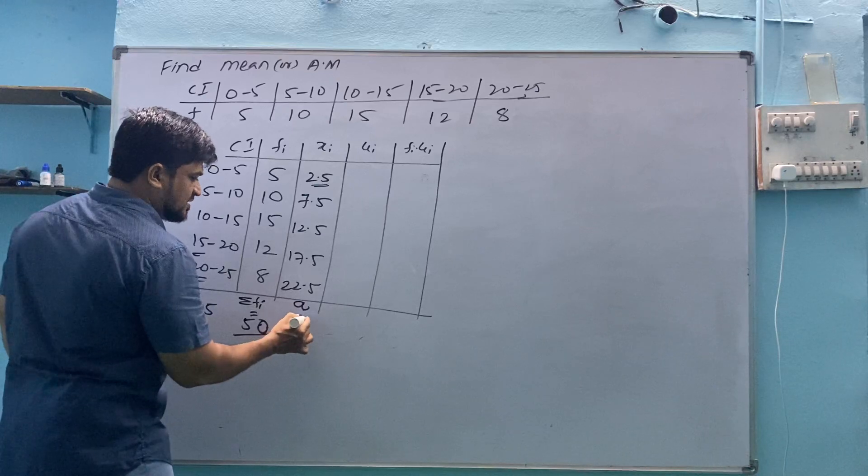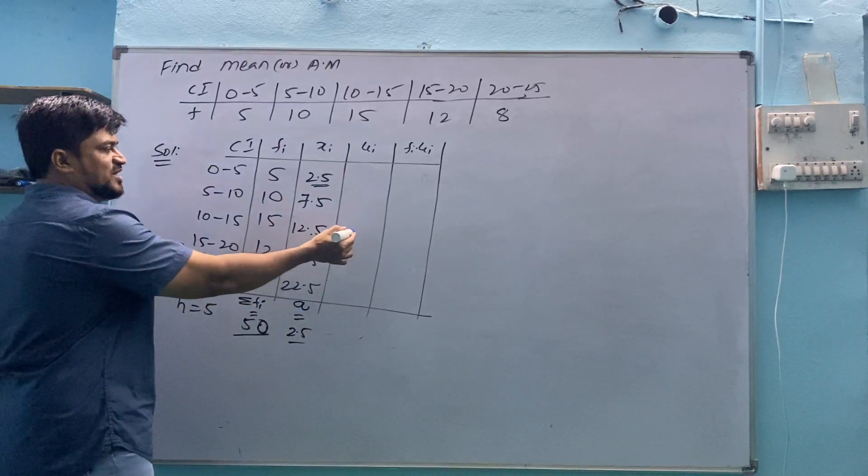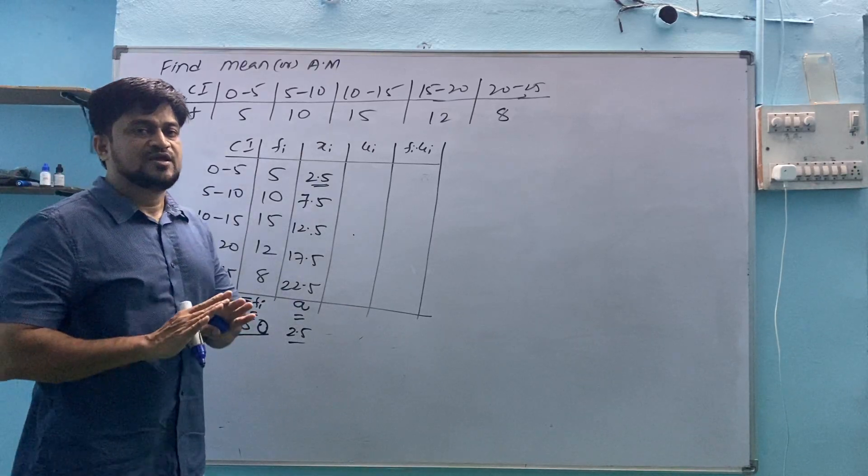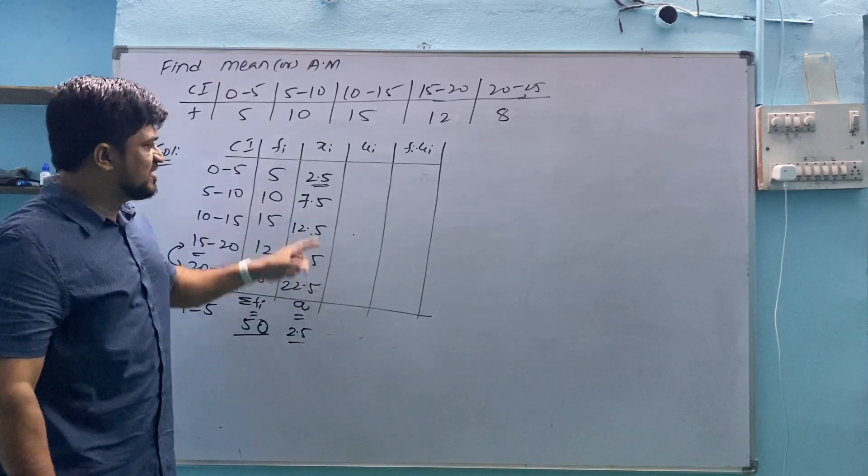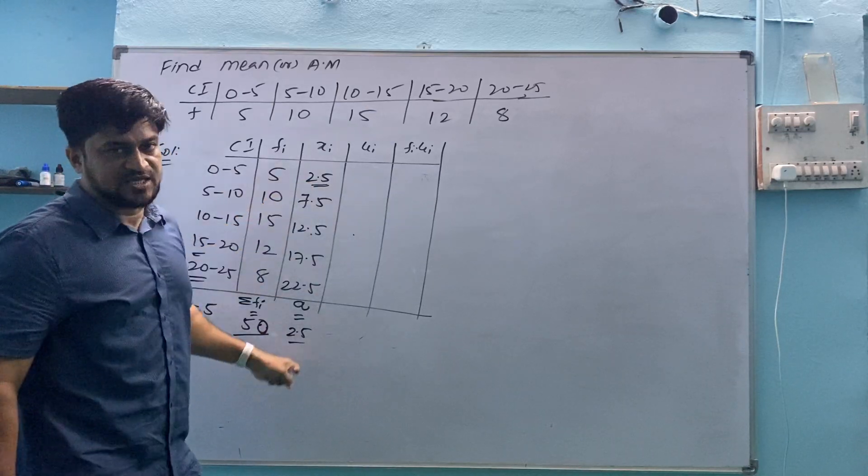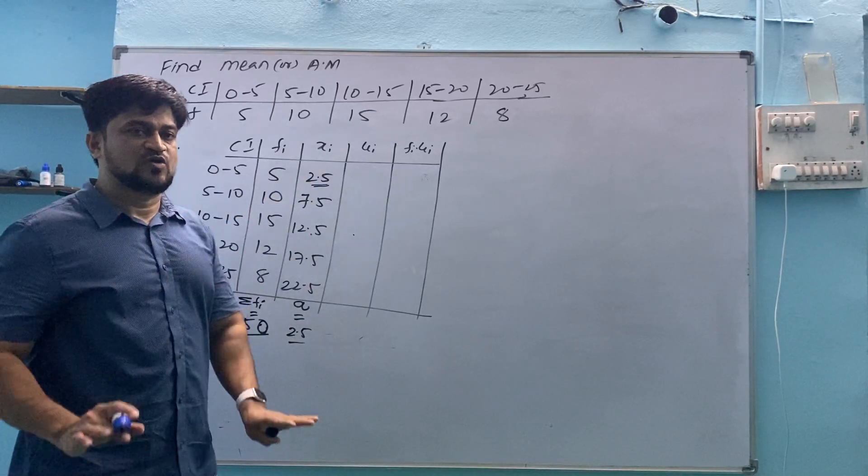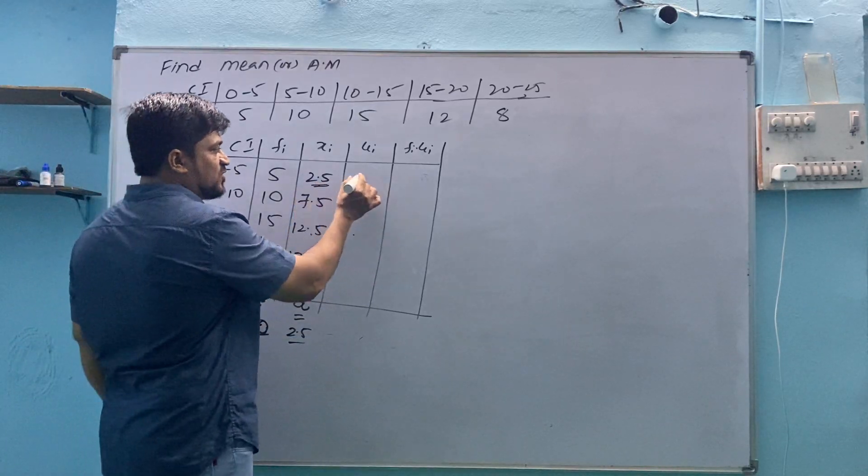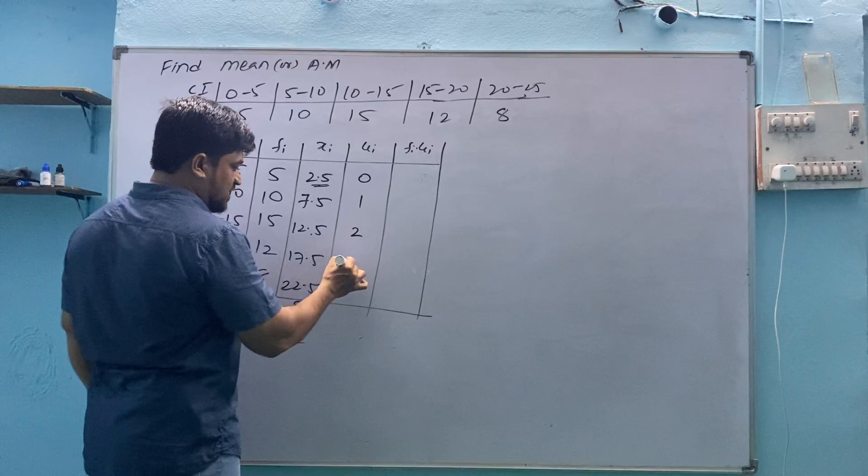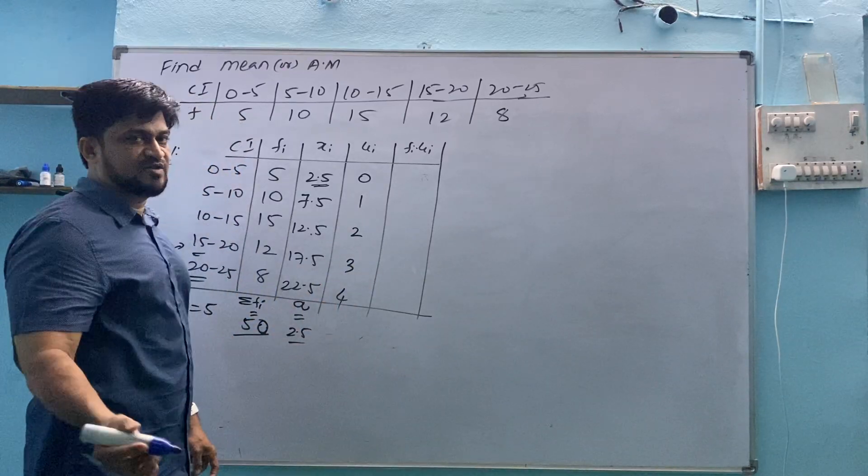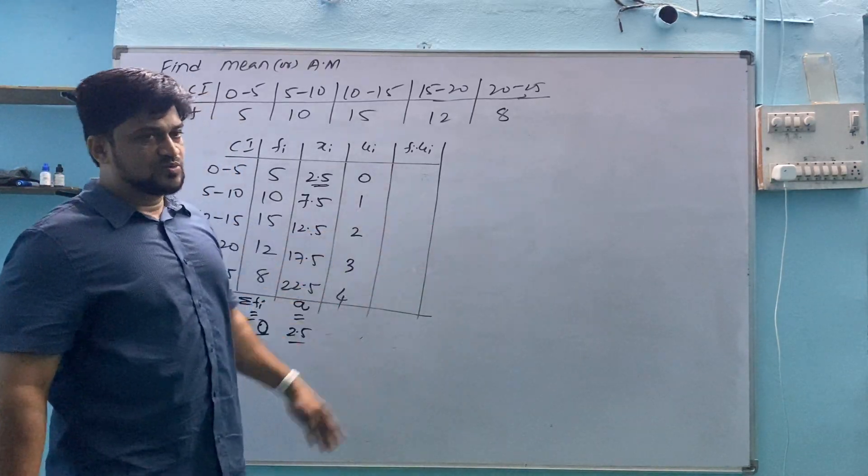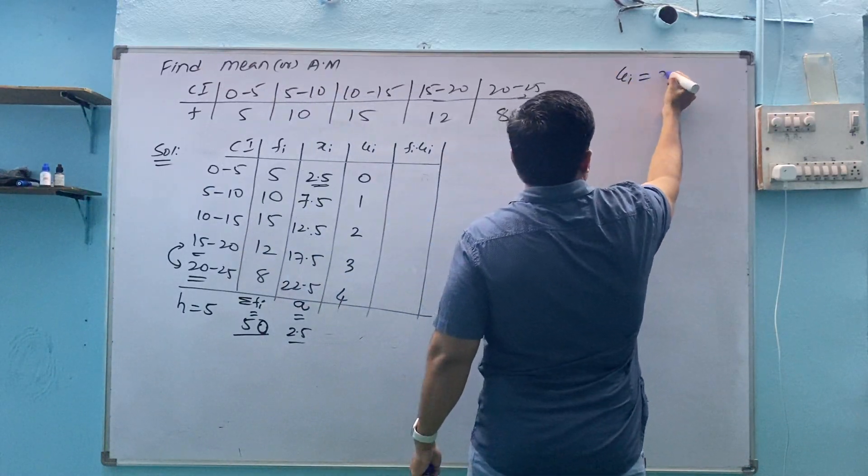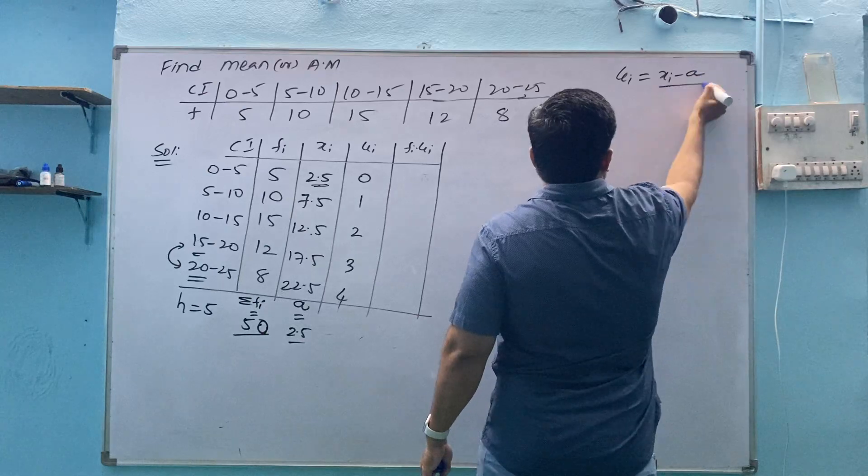Now from Xi, what you have to remember is the first value of Xi is A always. In examples they will take A as center value. Then 0, minus 1, minus 2, all negative values we will not be taking. We are taking first value as A. You have to take first value as A always. After taking A, if we have taken first value as 0, then 1, 2, 3, 4. How we are getting this? In the previous video I have shown you.